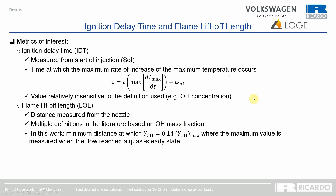Moving to the reacting simulations, two metrics of interest are considered. The first is the ignition delay time, corresponding to the time at which the maximum rate of increase of the maximum temperature occurs. The second metric is the flame lift-off length — the distance from the nozzle to the flame base, defined here as the minimum distance at which the OH mass fraction is 14% of the steady-state maximum OH mass fraction.